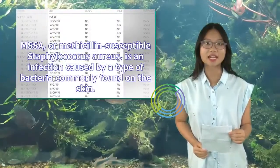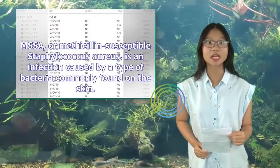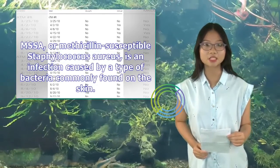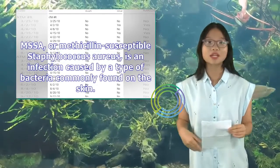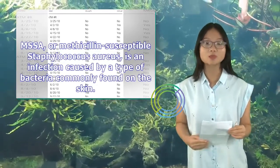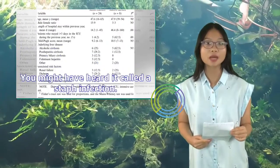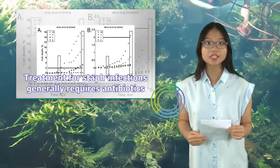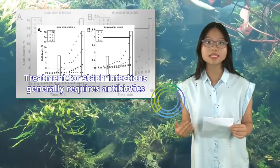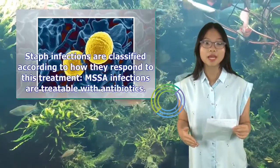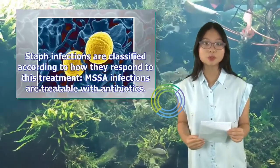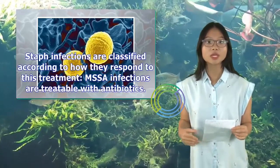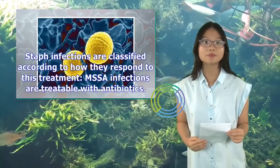MSSA, or methicillin-susceptible Staphylococcus aureus, is an infection caused by a type of bacteria commonly found on the skin. You might have heard it called a staph infection. Treatment for staph infections generally requires antibiotics. Staph infections are classified according to how they respond to this treatment. MSSA infections are treatable with antibiotics.